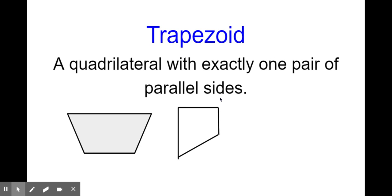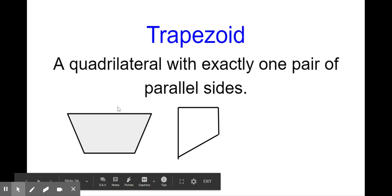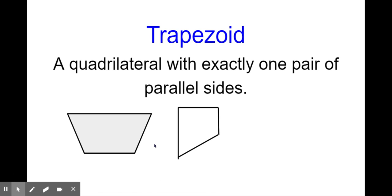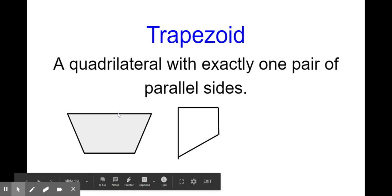Last is a trapezoid. A trapezoid is a quadrilateral with exactly one pair of parallel sides. The only thing that's different from a parallelogram is that a trapezoid only has one pair of parallel sides. If you look where my mouse is, this side and this side are parallel and will go on forever in those directions, but the other two sides would eventually meet because they're not parallel. Remember: a trapezoid has exactly one pair of parallel sides.